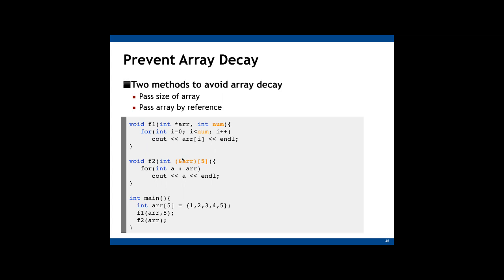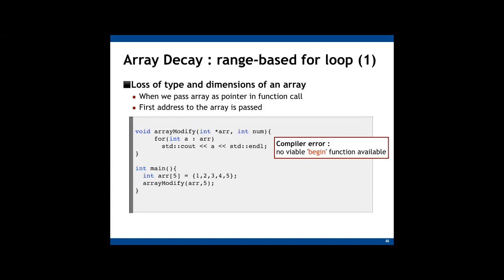Another method to prevent array decay is to pass the array into the function by reference. The F2 function receives an array reference, and this will prevent the automatic conversion of the array into a pointer, thus preventing array decay. Because this is an array reference, you can use it just like an array — we can iterate it because the size and all other array information is not lost. We can directly use this argument in a range-based for loop. No information is lost if we use a reference.